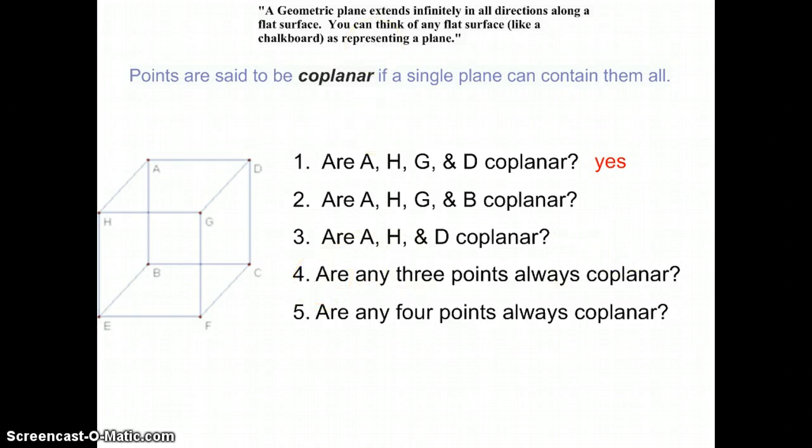Are A, H, G, B? Well, A, H, G is the top of the box. Is B down here on top of that box? So there's no way that I can make a plane. So are they coplanar? No.